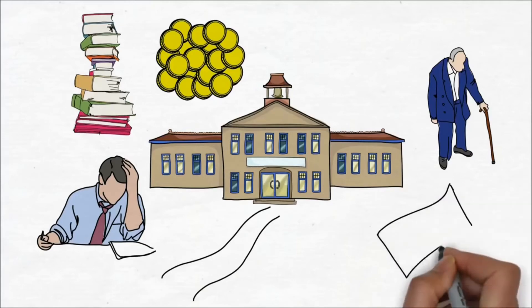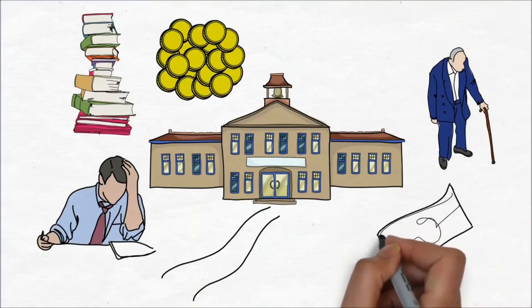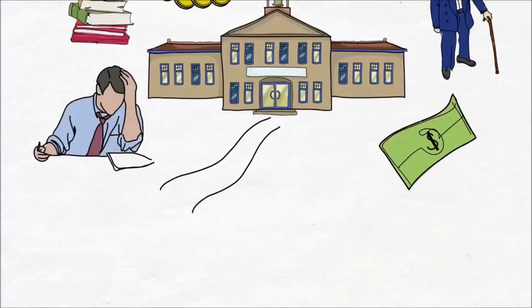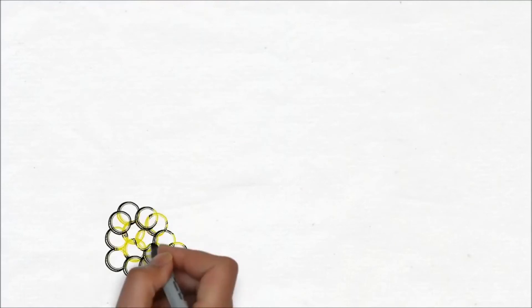The rich become richer because they make assets. On the other hand, the middle class only spend their money on liabilities.